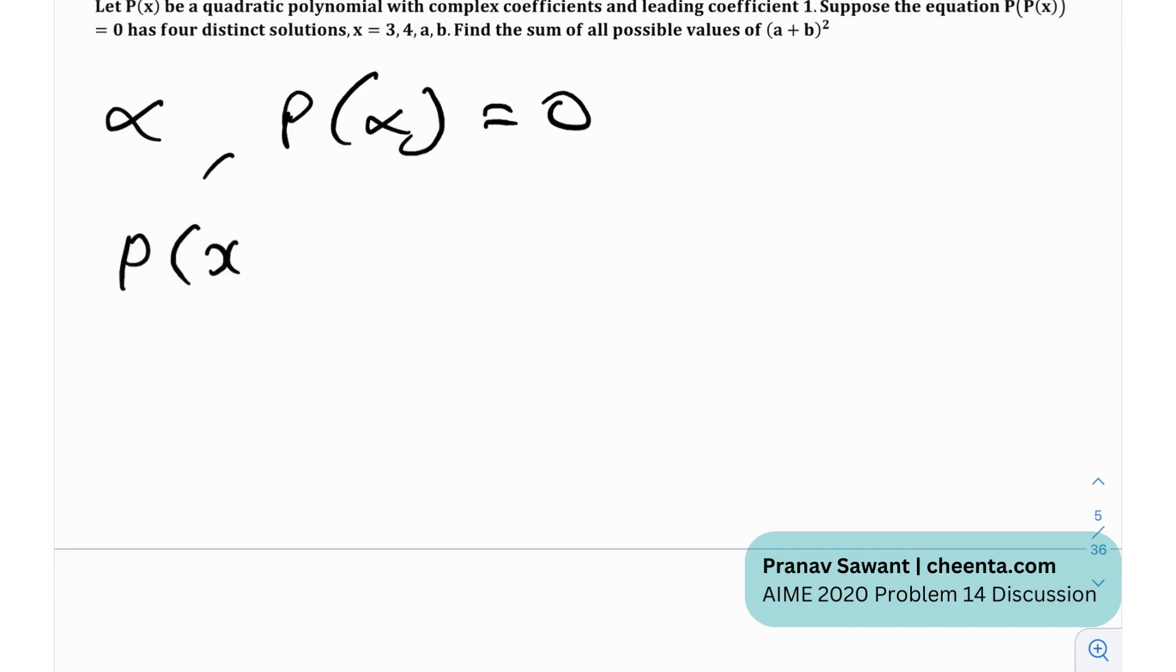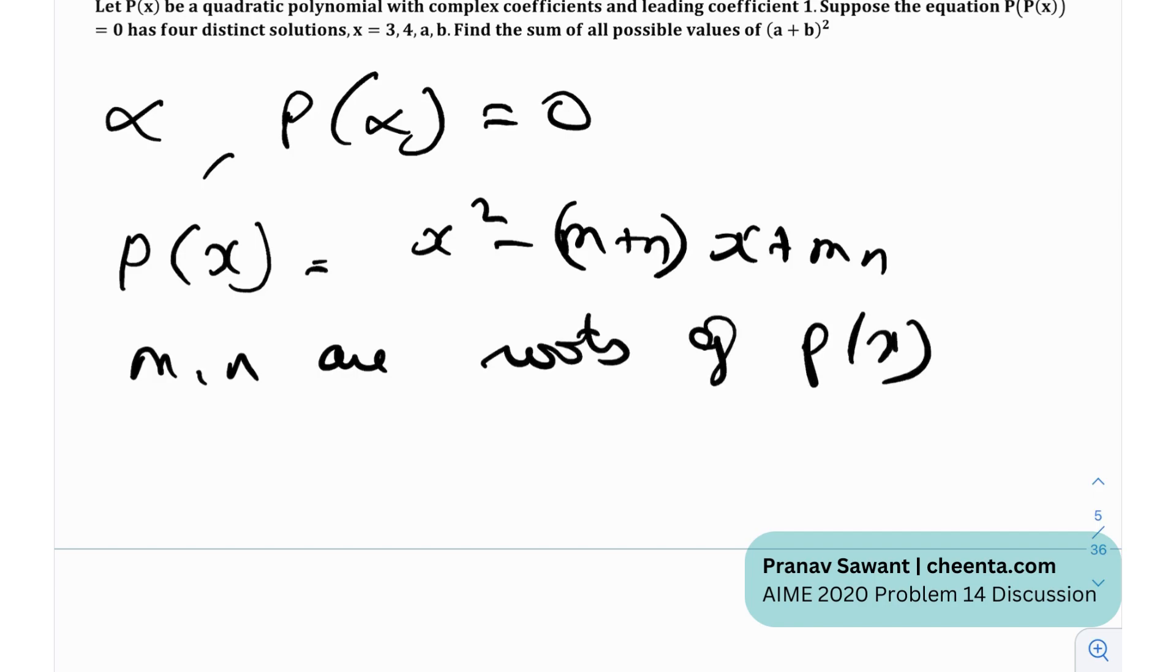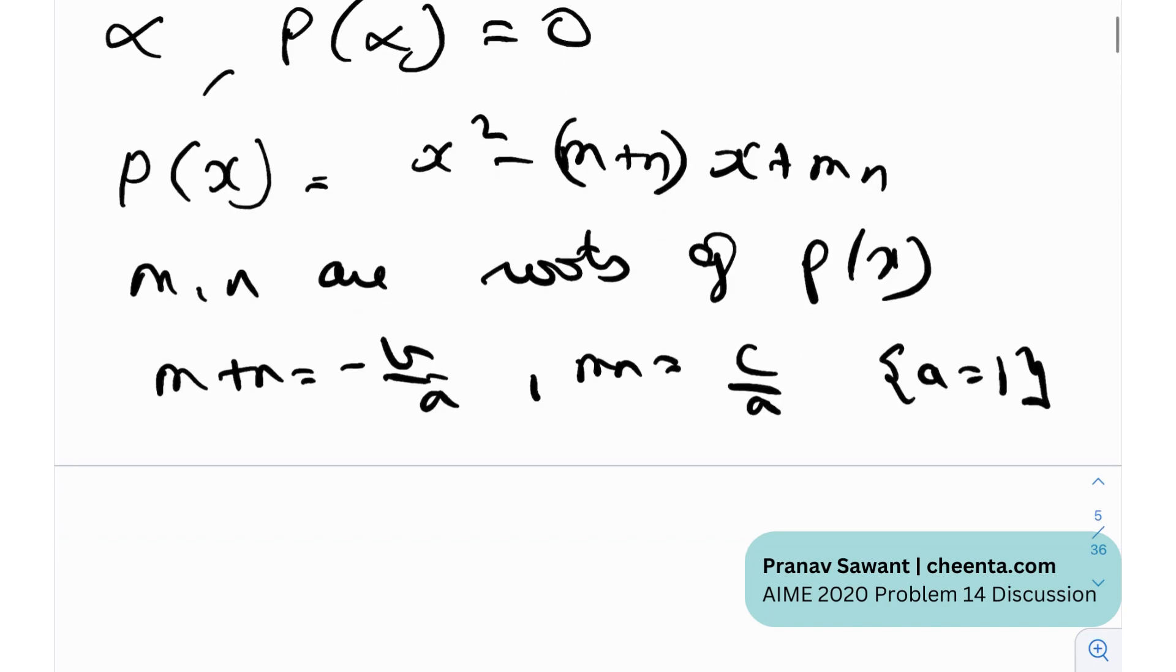So now if I take p of x, the polynomial p of x, to be equal to x squared minus m plus n times x plus mn, this essentially means that m comma n are roots of p of x. And essentially from Vieta's relations, we know that m plus n is minus b by a, and mn is c by a, and a in this case is 1. So we get this equation over here for p of x.